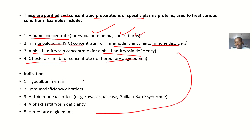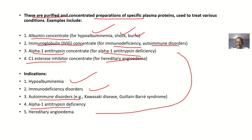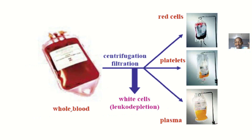To list the indications again: hypoalbuminemia, immunodeficiency disorders, autoimmune disorders like Kawasaki disease and Guillain-Barré syndrome, alpha-1-antitrypsin deficiency, and hereditary angioedema.